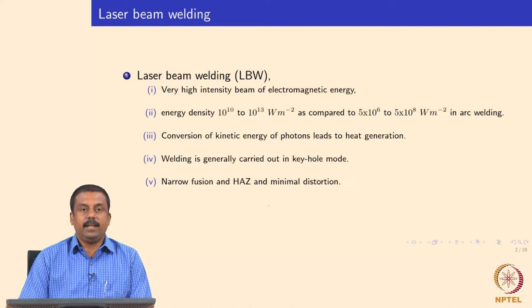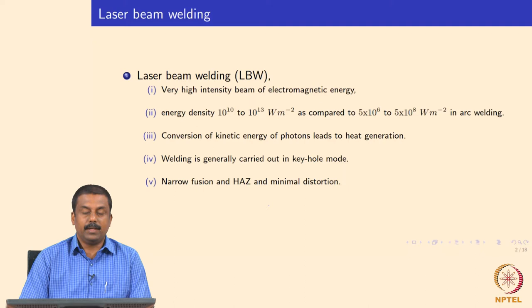In laser beam welding, we use laser as a heat source to heat up the workpiece, melt it, and form a fusion joint. The laser is a very high intensity beam of electromagnetic energy. We make use of electromagnetic energy — the light photons — to heat up the workpiece. When a laser beam passes through, the kinetic energy of the photons is converted into heat energy in the workpiece as they get attenuated within it.